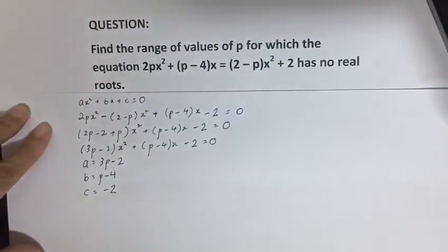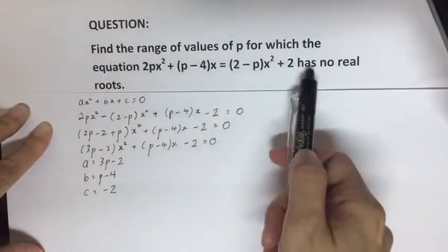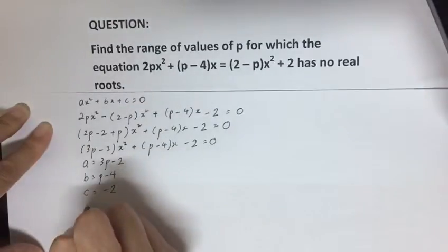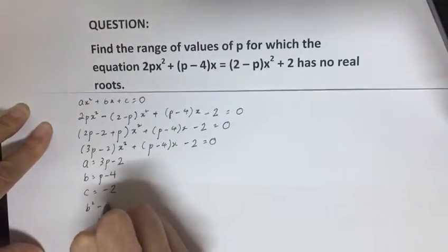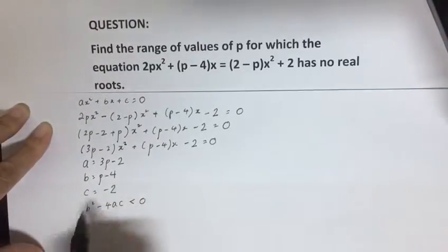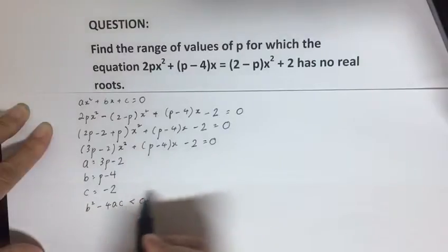So again, let's substitute into b² - 4ac. But the question tells you that this equation has no real roots, so b² - 4ac is less than 0.